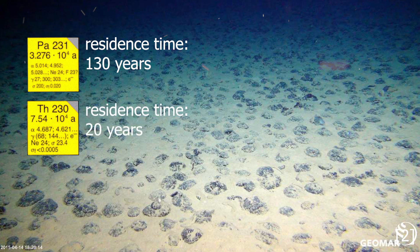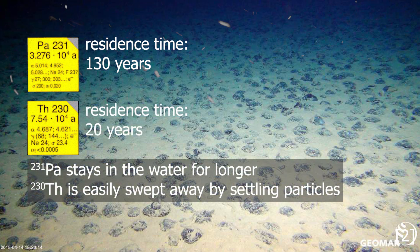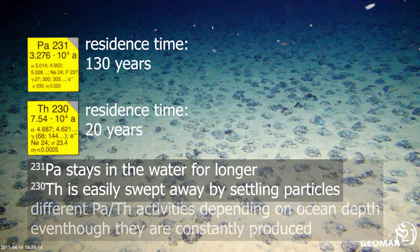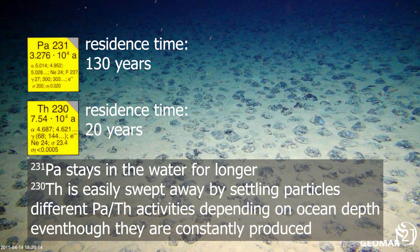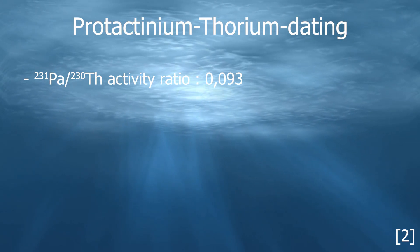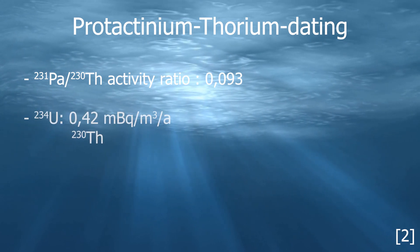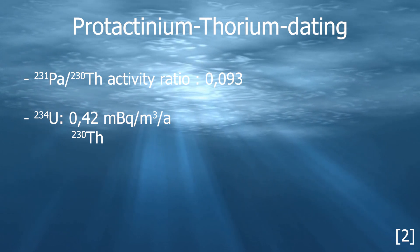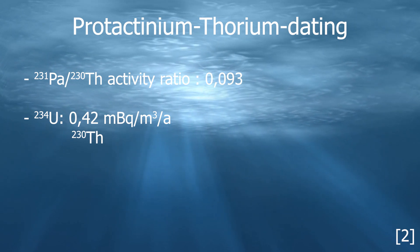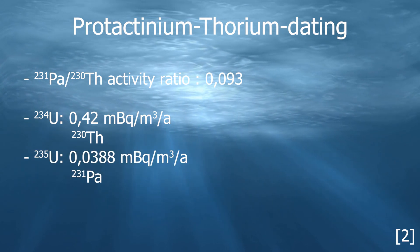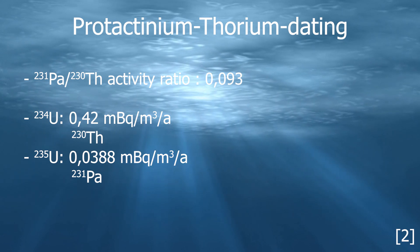For thorium-230, the residence time is 20 years. Because the insoluble thorium is swept away by particles faster, this can lead to a spatial separation of protactinium and thorium, which can be used to measure ocean circulation rates. This only works if a constant amount of both radionuclides is being produced. The activity ratio of protactinium to thorium is 0.093. Uranium-234 produces 0.42 mBq per cubic meter per year of thorium-230 in seawater, and uranium-235 produces 0.0388 mBq per cubic meter per year of protactinium-231, resulting in a ratio of 0.093.